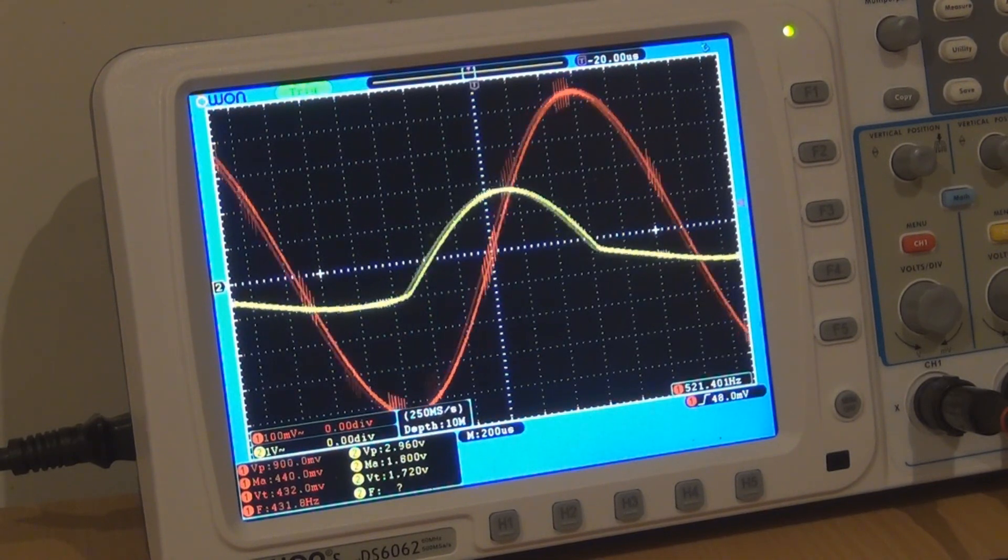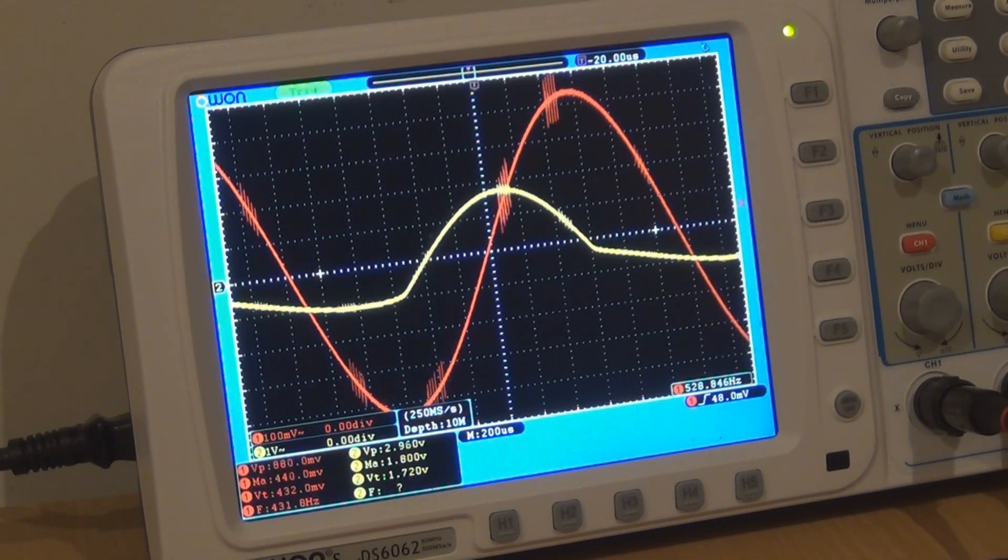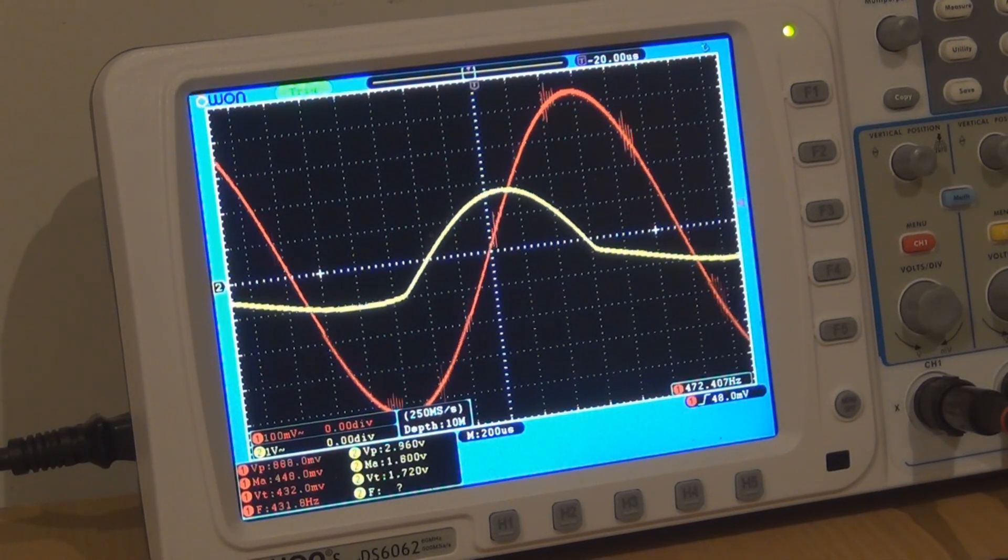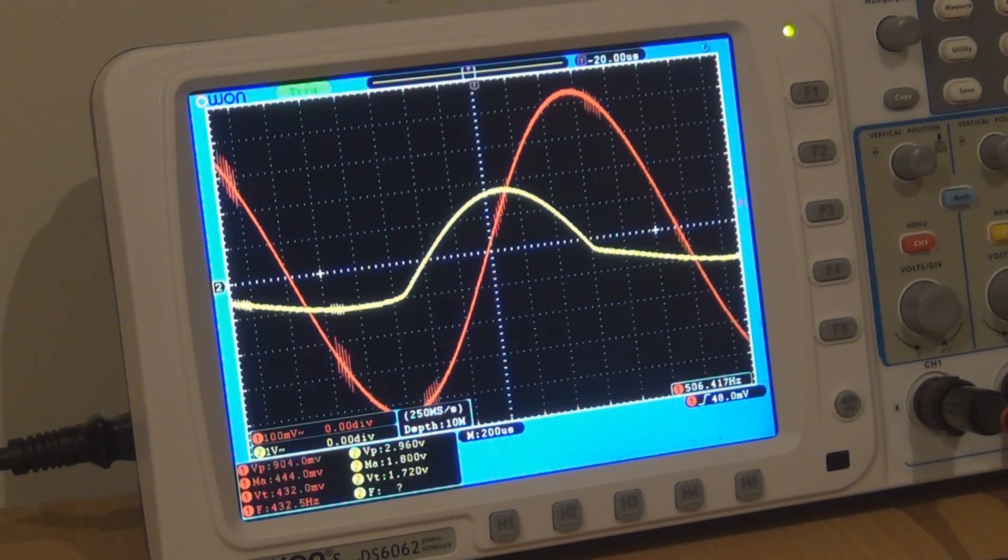But yeah, so that's a bit of insight into how diodes affect your signal in the feedback loop of an op amp. Hope you got something out of that and thanks for watching.